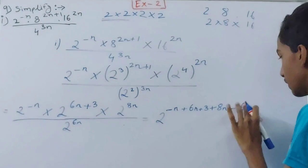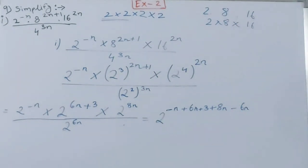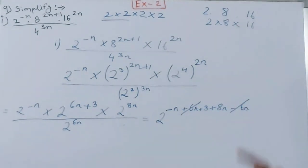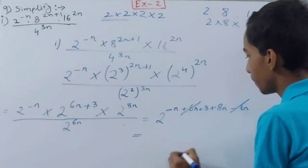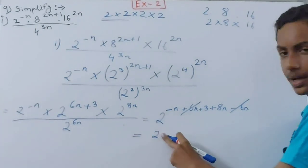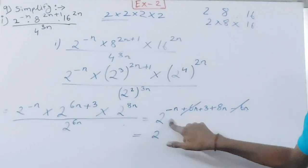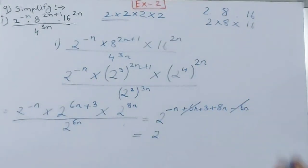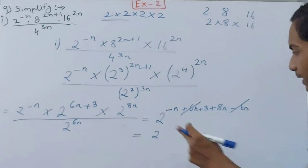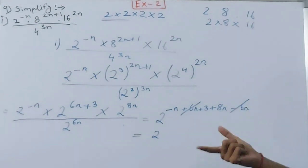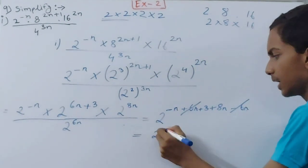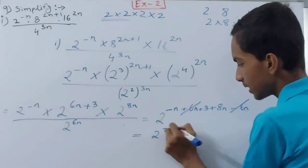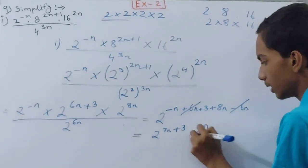We get 2^(−n + 6n + 3 + 8n − 6n). The +6n and −6n cancel. We are left with −n + 8n = 7n, plus 3, giving 2^(7n+3) as our answer for the first part.